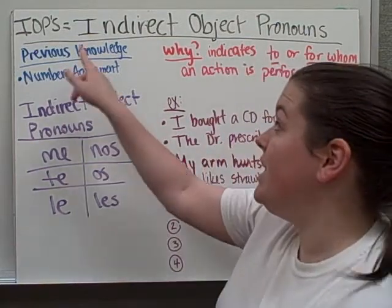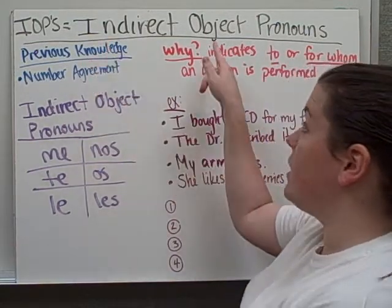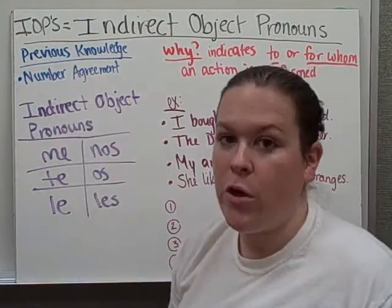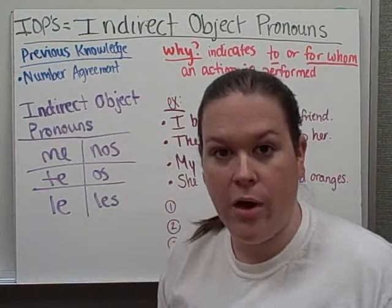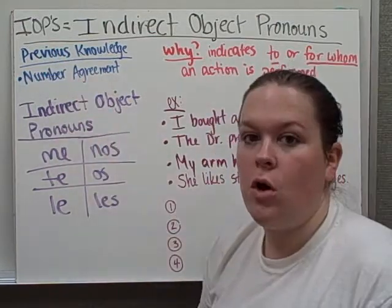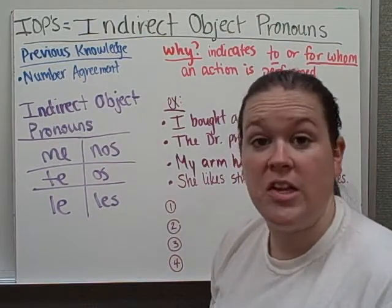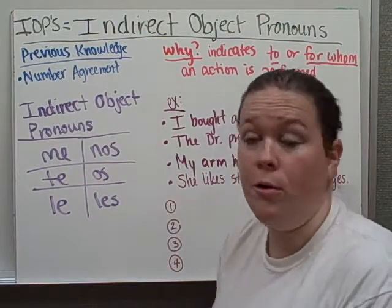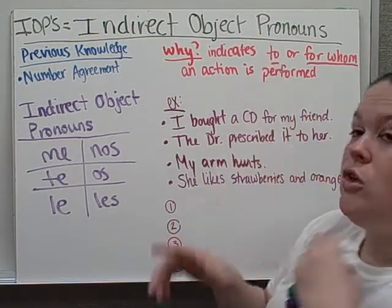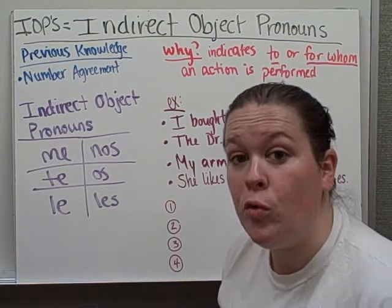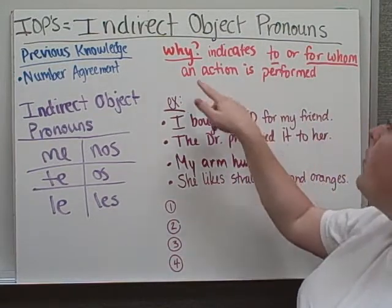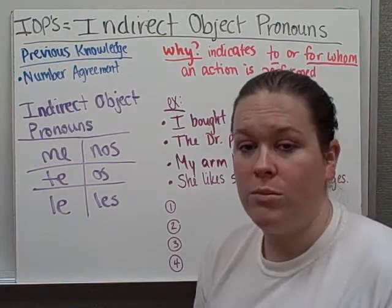We are talking about indirect object pronouns, or IOPs, as I'll call them throughout the video. Previous knowledge: just know number agreement, whether a word is singular or plural. And why we use these is to indicate to whom or for whom an action is performed.